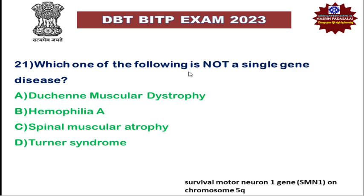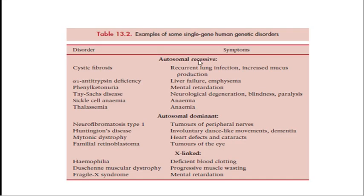First question: which of the following is not a single gene disorder? These are examples of single gene human genetic disorders, which generally cause mutation in a single gene of a chromosome. This includes cystic fibrosis, alpha-1 antitrypsin deficiency, phenylketonuria, sickle cell anemia, thalassemia, neurofibromatosis type 1, Huntington disease, myotonic dystrophy, familial retinoblastoma, hemophilia, muscular dystrophy, and fragile X syndrome.